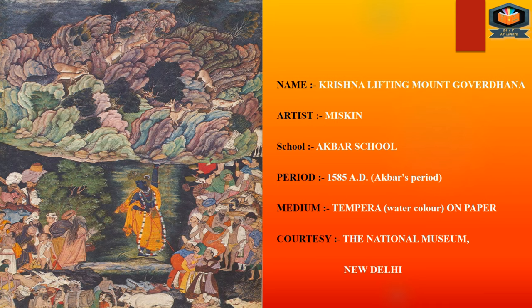Now the introduction of this painting. Name: Krishna lifting Mount Govardhan. Artist: Miss Kane. School: Akbar School. Period: 1585 AD — this is a painting from the period of King Akbar. Medium: tempera and watercolor on paper. The source is the National Museum, New Delhi, where the painting is currently housed.